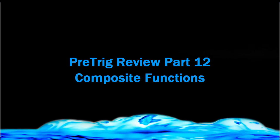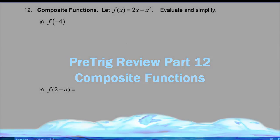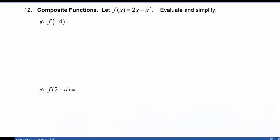In the pre-trig review part 12, we're going to study composite functions. Throughout this example we are going to use f of x is equal to 2x minus x squared. In each case we're going to evaluate and simplify the given quantity.